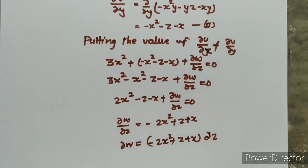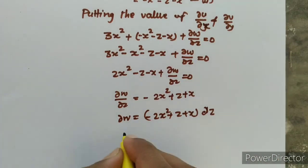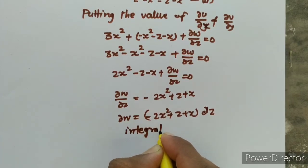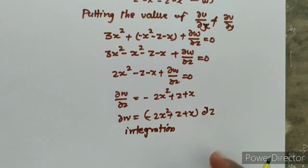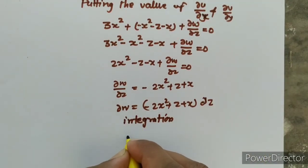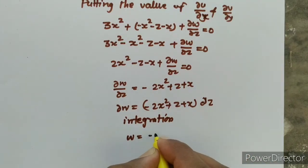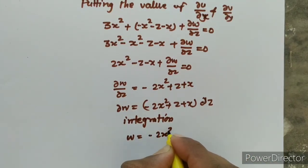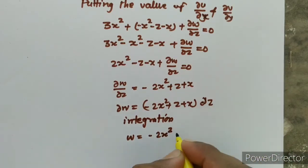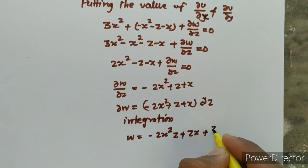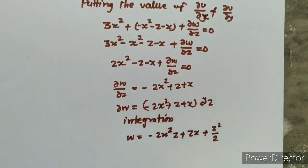What do we do on both sides? Integration on both sides, because we have to find the value of w, so we will do integration. What is w? Minus 2x squared, integrated with respect to z gives minus 2x squared z. Plus zx. Plus z squared over 2.